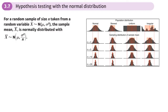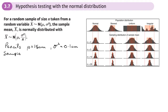Imagine there's a company that makes pencils and they make tens of thousands of pencils every day. These pencils have a mean size of 15 centimeters and a variance of 0.1 centimeters. The company wants to check that the mean size of the pencils hasn't changed, so they take a sample throughout the day — let's say a sample of 20 pencils.